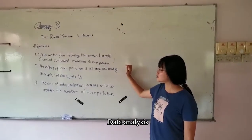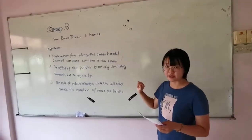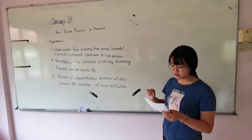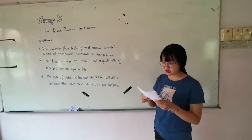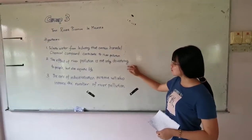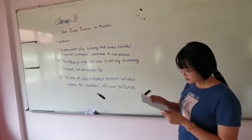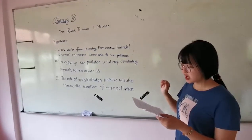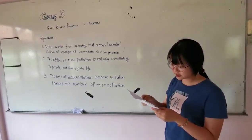Our first null hypothesis is: wastewater from industry that contains harmful chemical compounds is not related to river pollution. Based on our findings and analysis, we find that since the p-value, which is 0.236, is greater than 0.05, we fail to reject the null hypothesis at alpha equals 0.05. This means that respondents agree that chemical wastewater is one of the main contributors to river pollution. Our second null hypothesis is: the effects of river pollution are not only devastating but also affecting aquatic life. We found that the p-value is 0.377 and our alpha value is 0.05, so p-value is greater than alpha value. Therefore, we fail to reject the null hypothesis, which indicates that respondents agree that river pollution has been devastating towards aquatic life.